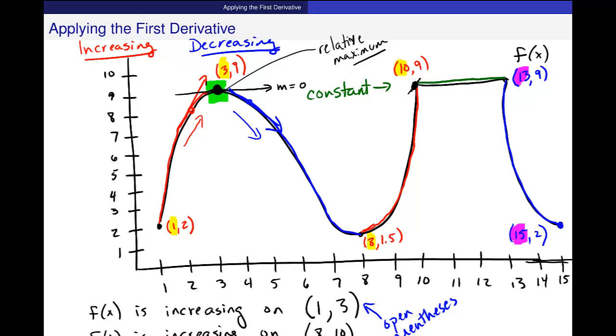Down here, we also have a local minimum right here at 8 and 1.5. It's not the lowest point on the entire graph possibly, but it looks like a dip in the graph where you are locally. Nearby, it looks like you're at a low point.